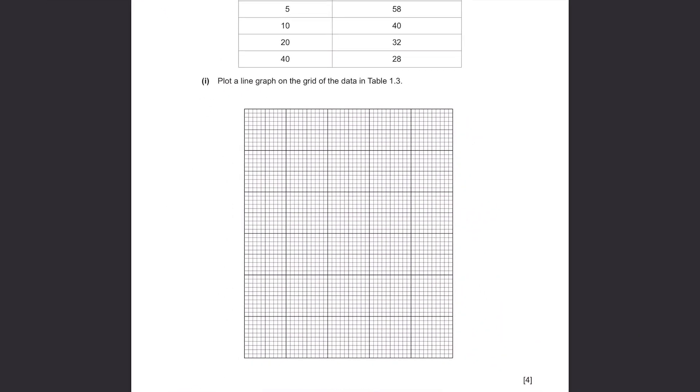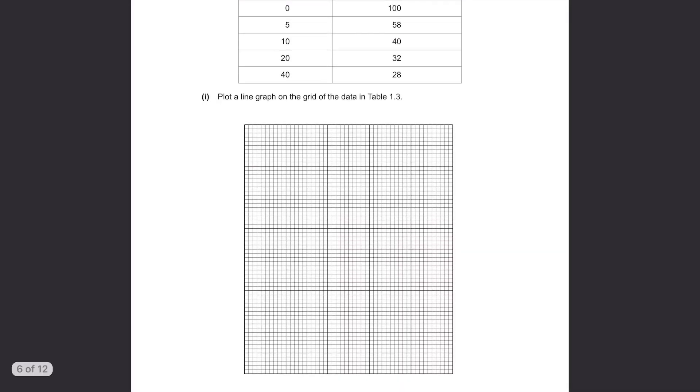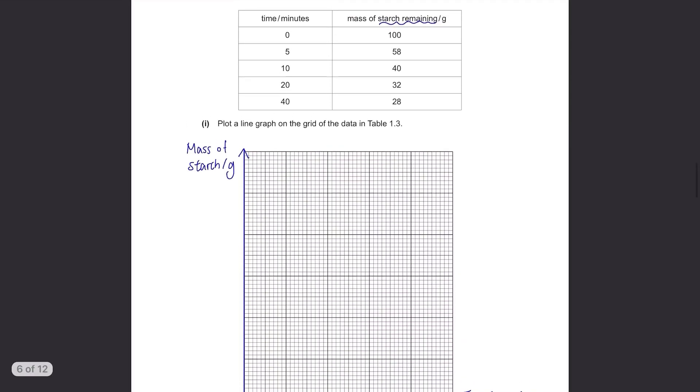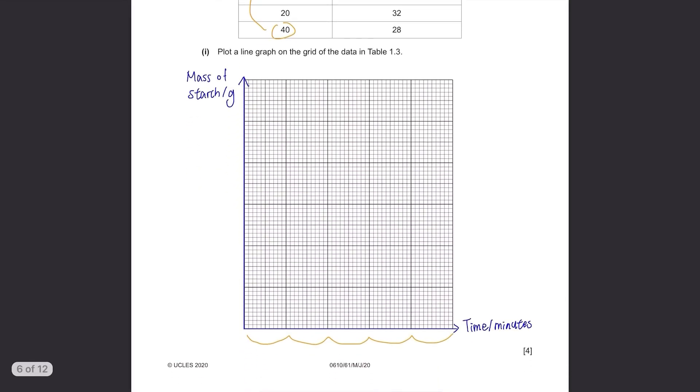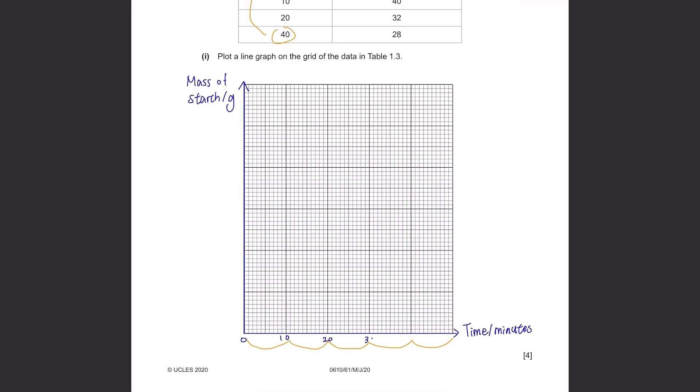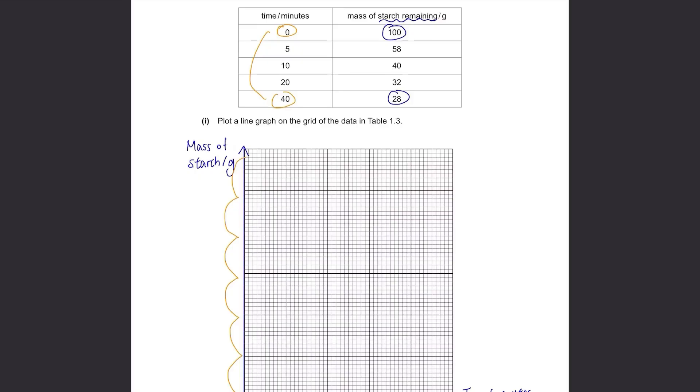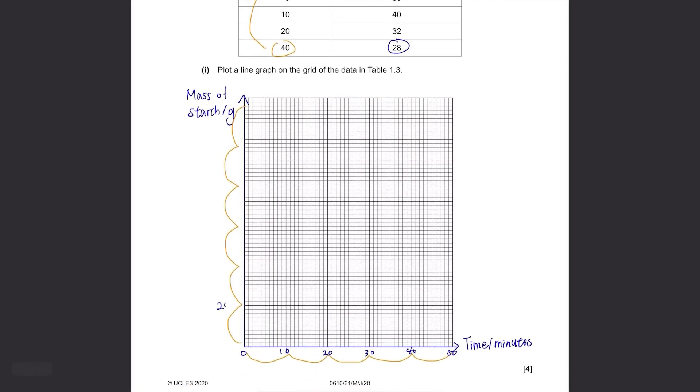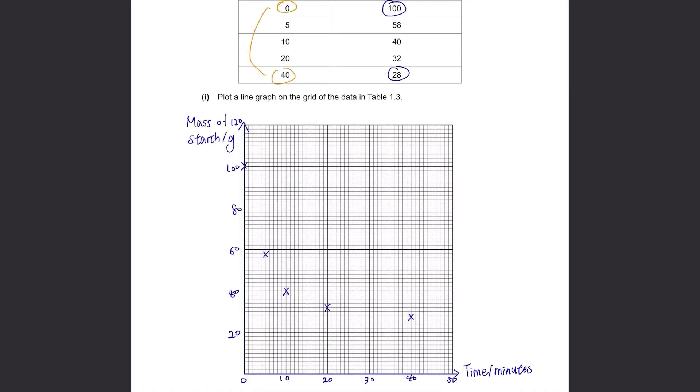Plot the line graph on the grid of the data in Table 1.3. First thing we need to do is to draw the x and y-axis. X-axis should be time in minutes and y-axis should be mass of starch in grams. We have 5 big boxes here on the x-axis and the time taken in the table is from 0 to 40. So we can set one big box as 10: 0, 10, 20, 30, 40 and 50. For y-axis, we have 6 big boxes and the mass is from 28 to 100 in the table. So set one big box as 20 each: 0, 20, 40, 60, 80, 100 and 120. Now we can plot the points. Then connect the points. The graph should occupy at least half of the grid so keep that in mind while choosing the scale.